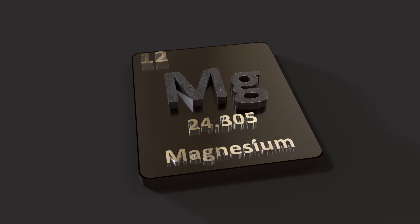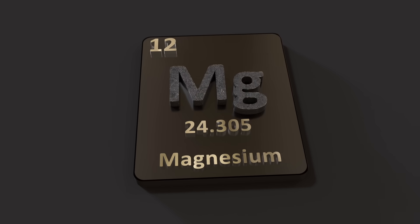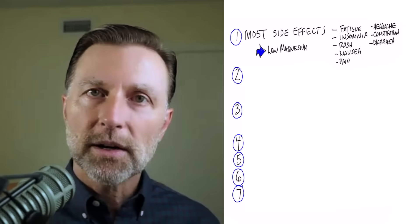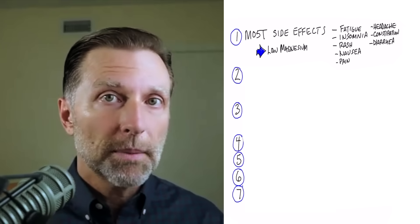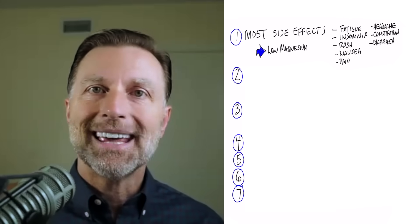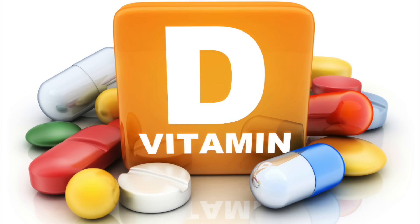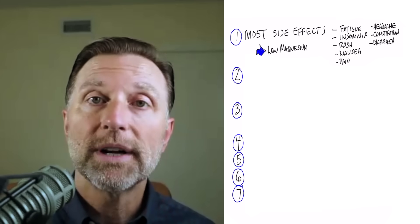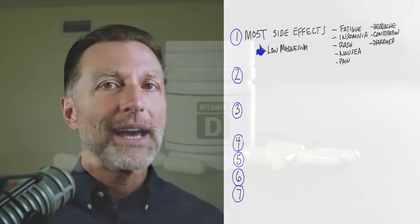Magnesium is such an important mineral in relationship to vitamin D. It helps it work better. And if you're deficient in magnesium, which a lot of people are, vitamin D may give you additional issues. In other words, if you take more vitamin D, it can exaggerate an already deficient situation with magnesium.